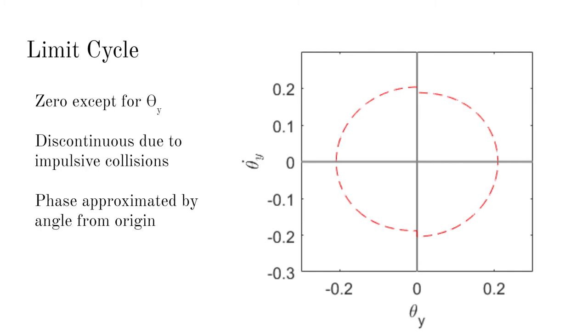Since the system does not naturally follow this limit cycle, we can divide the controller design into two parts: a parallel controller and a transverse controller.